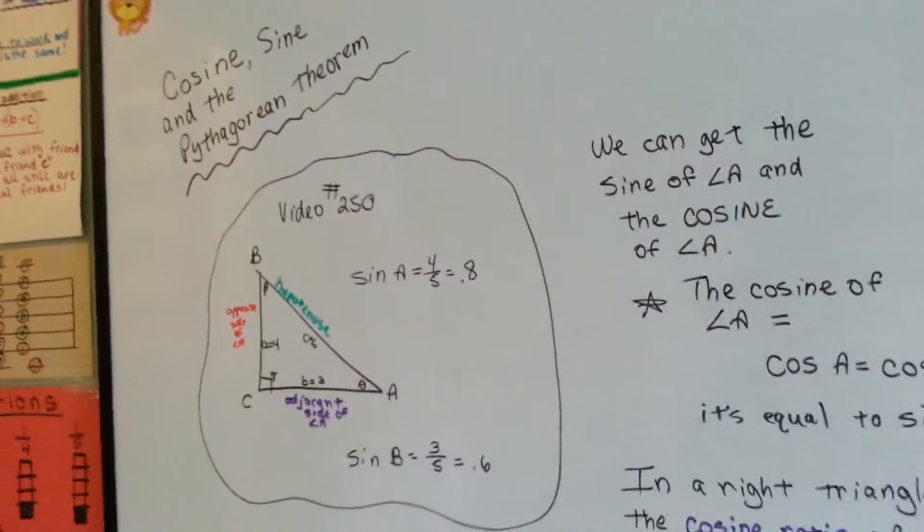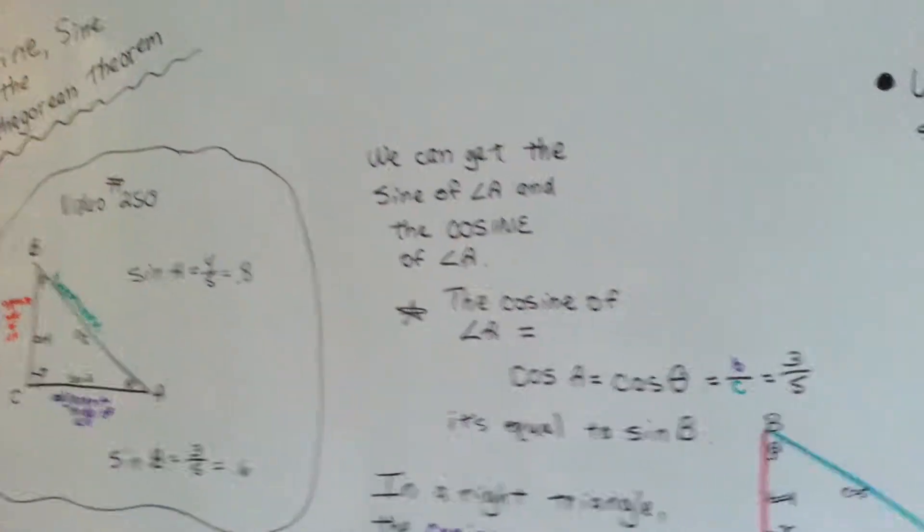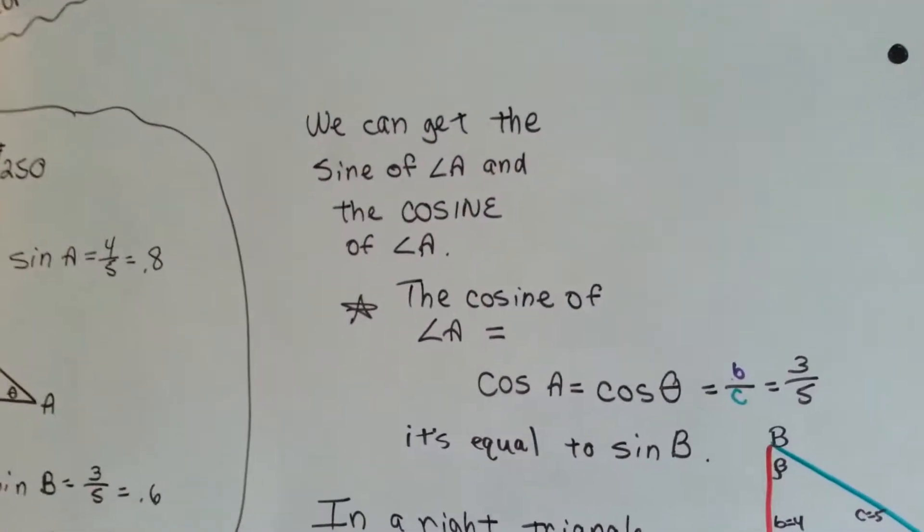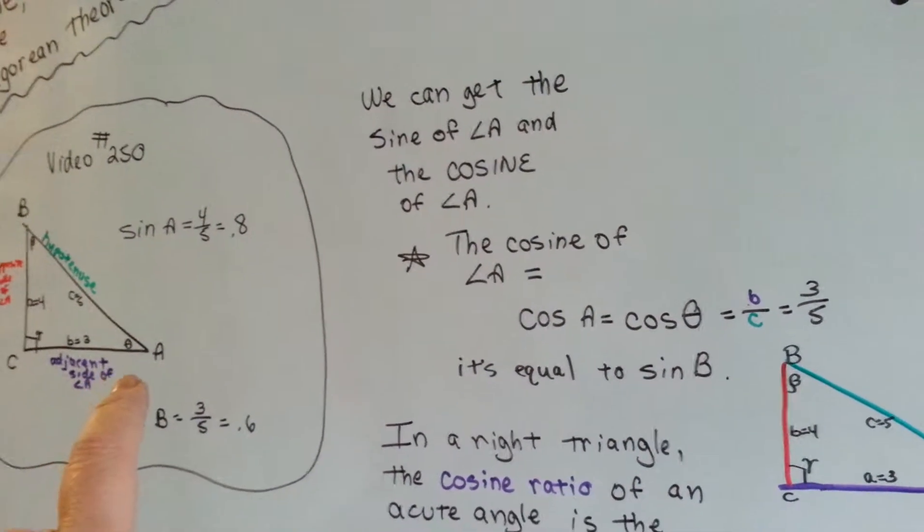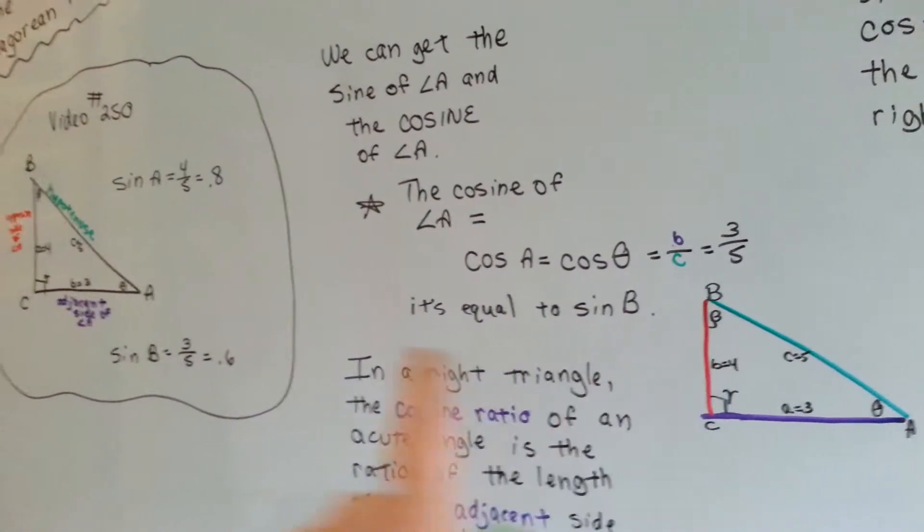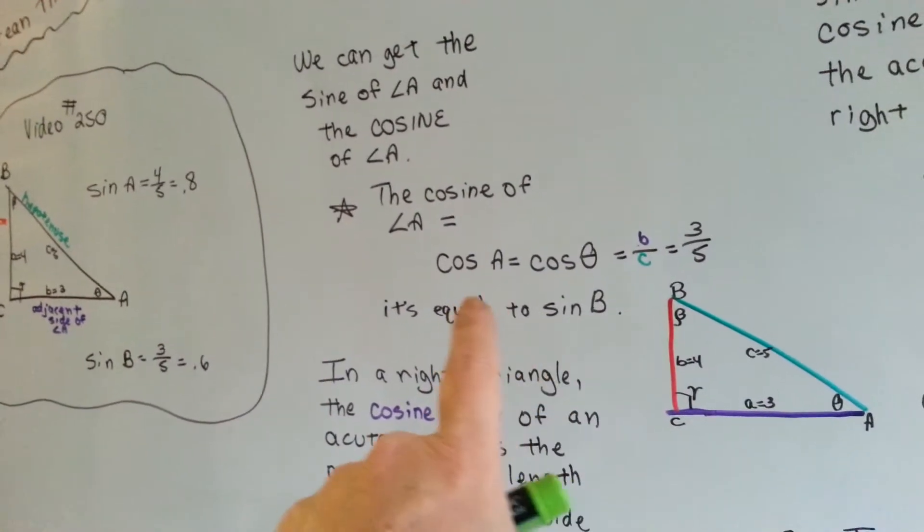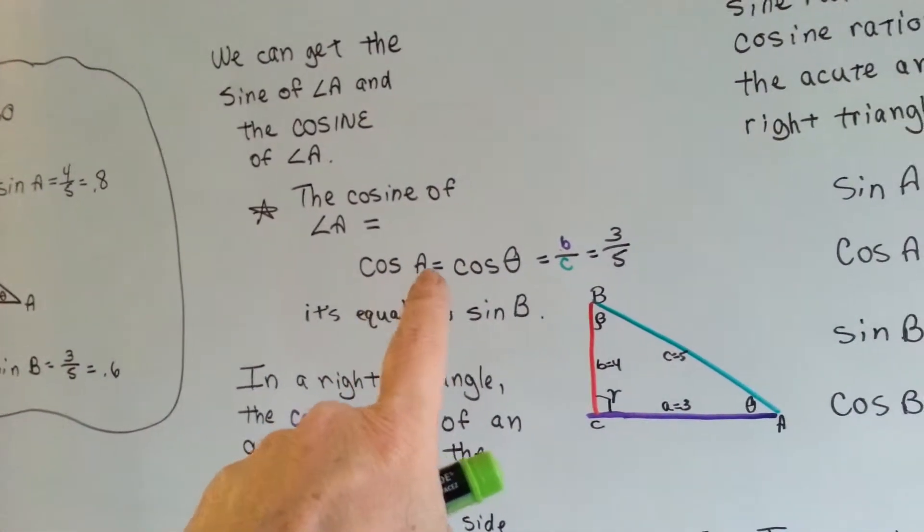So, how does the Pythagorean theorem fit into this? Well, I'll show you. We can get the sine of angle A and the cosine of angle A. The cosine of angle A is, and I kind of copied it here, so we didn't have to stretch so much.